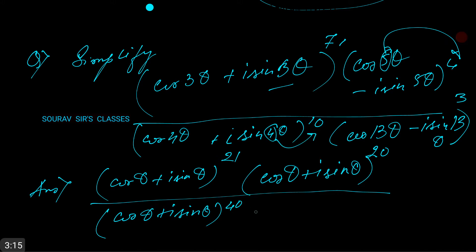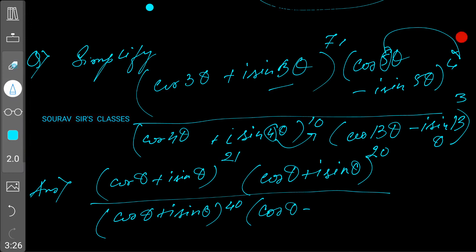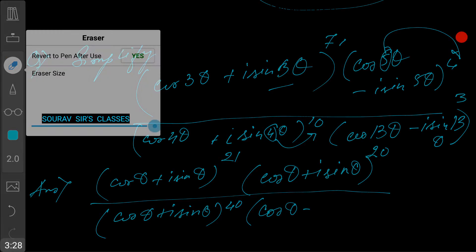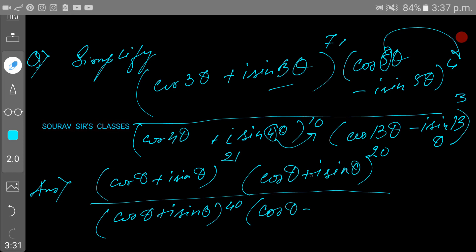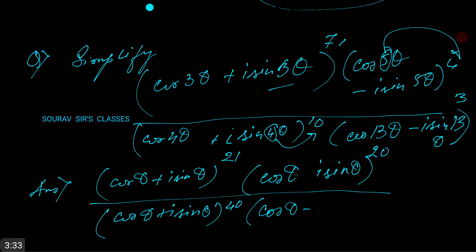And 13 goes out to give us (cos θ - i sin θ). This is a minus sign.